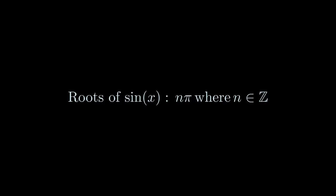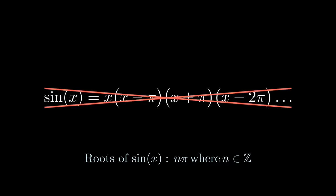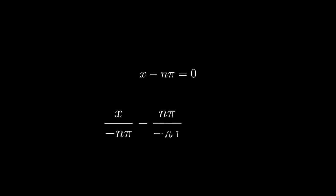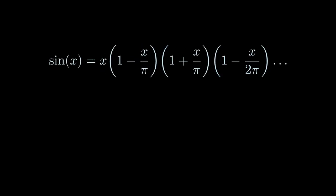The roots of sine x are of the form n pi where n is an integer. So, we can write sine x as x times x minus pi times x plus pi times x minus 2 pi and so on forever. But this couldn't be true because this product is clearly breaking the domain rules of sine x. Is there any other way of writing x minus n pi equals 0? Yes. Divide the whole equation by negative n pi. And you get 1 minus x over n pi equals 0. The left-hand side is the form of the factors we were looking for. So, sine x equals x times 1 minus x over pi times 1 minus x over negative pi and so on forever. This actually works.